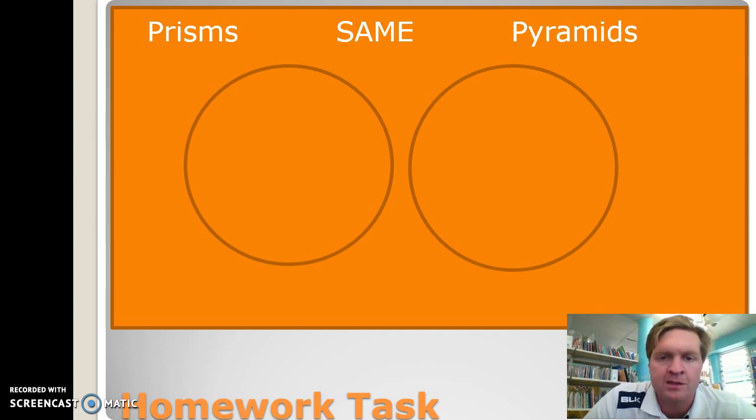We've been doing this in class, and it relates to what we're doing in reading at the moment, which is comparing and contrasting. What I need you to do is create a Venn diagram which looks at prisms and pyramids. What are the features of prisms that make a prism a prism? What are the features of pyramids that make a pyramid a pyramid? And what are the things that they have in common?